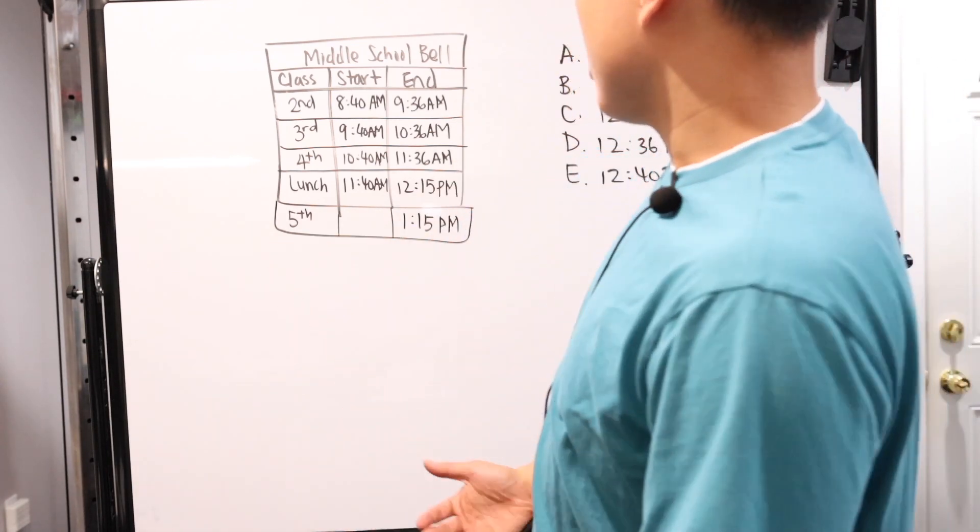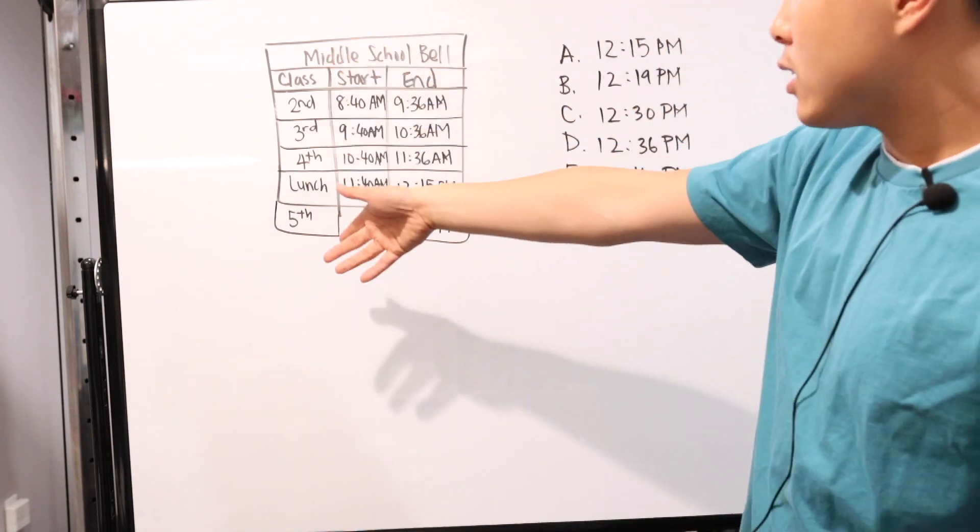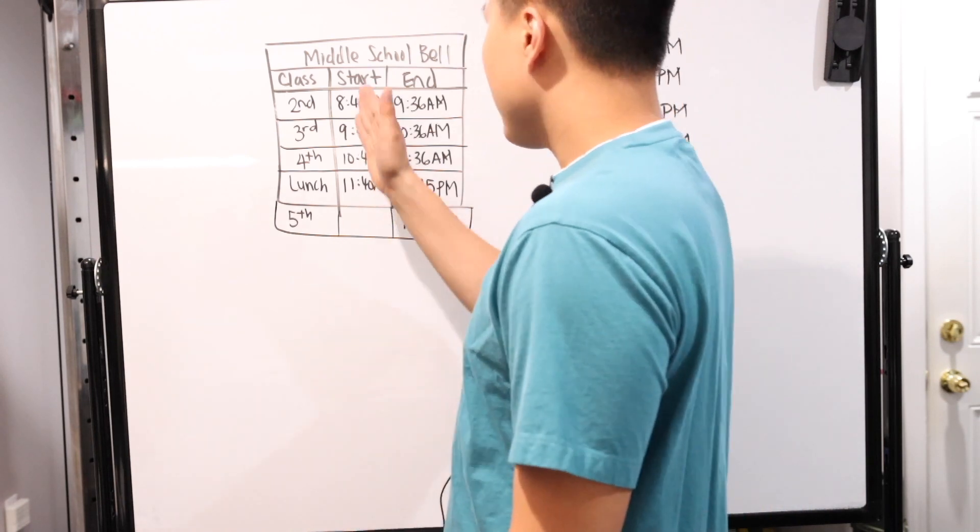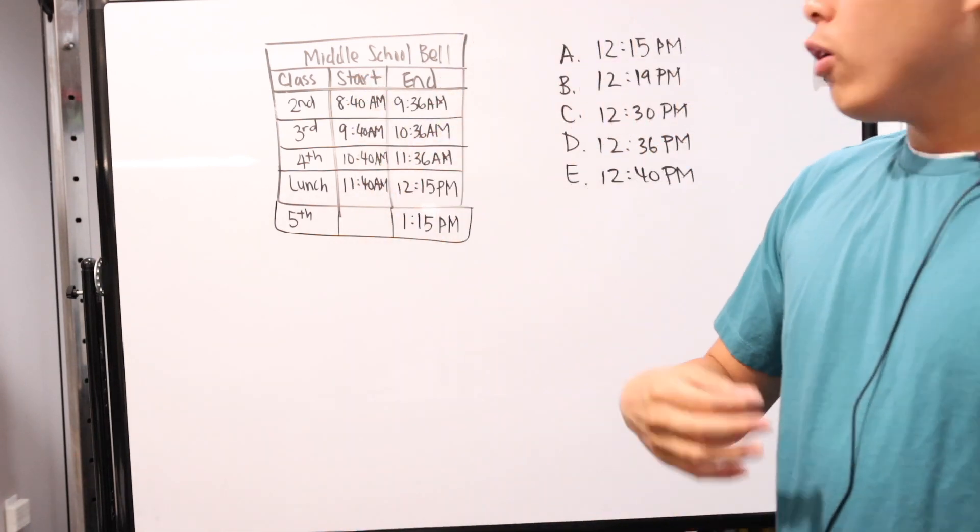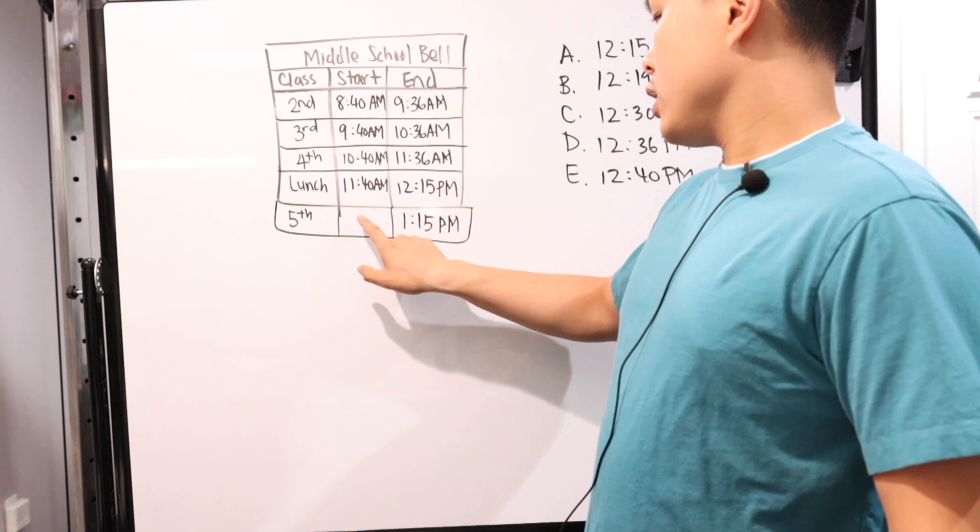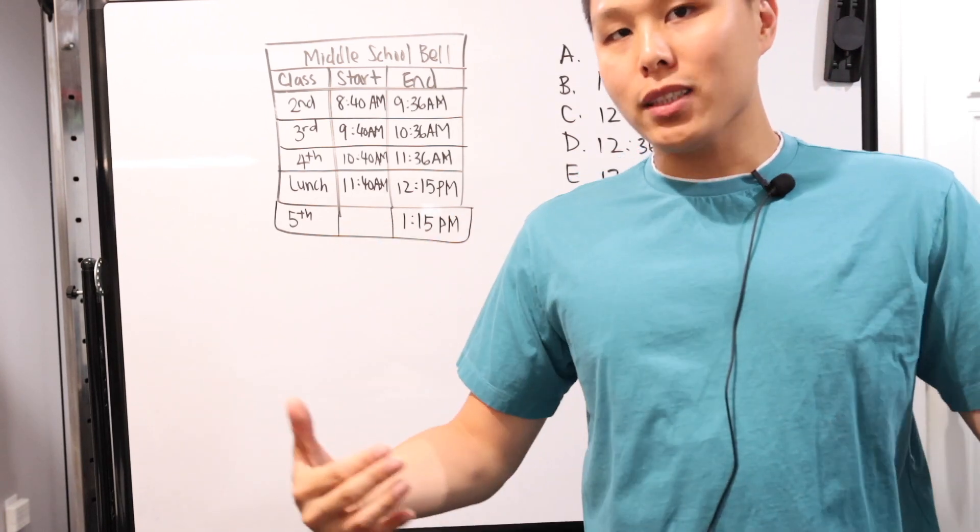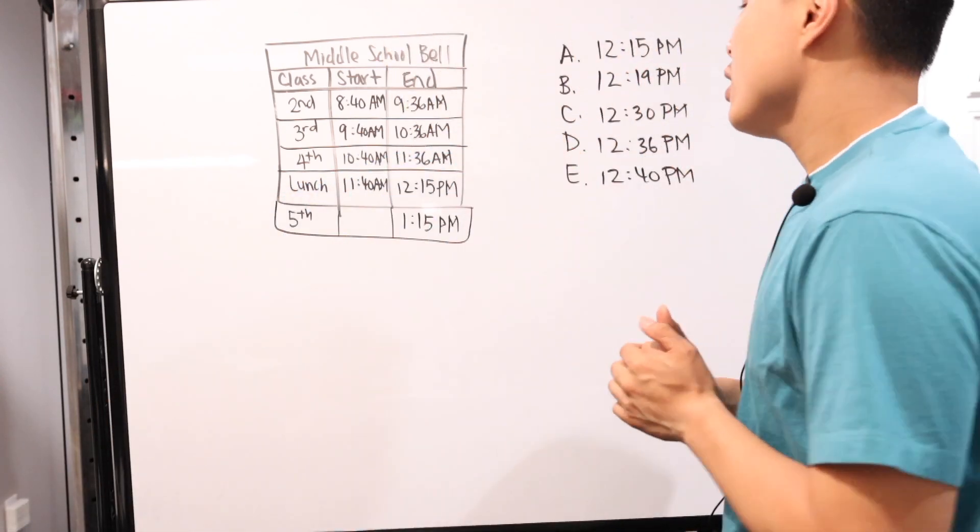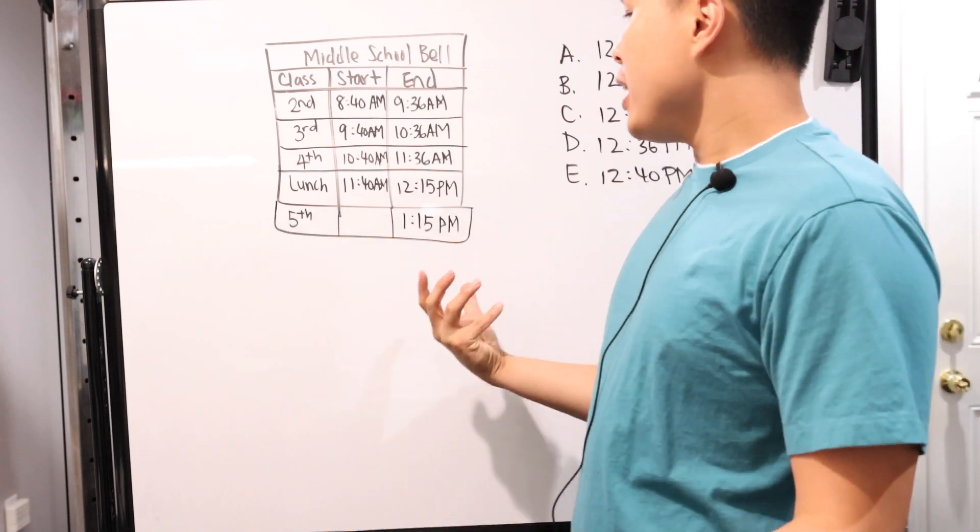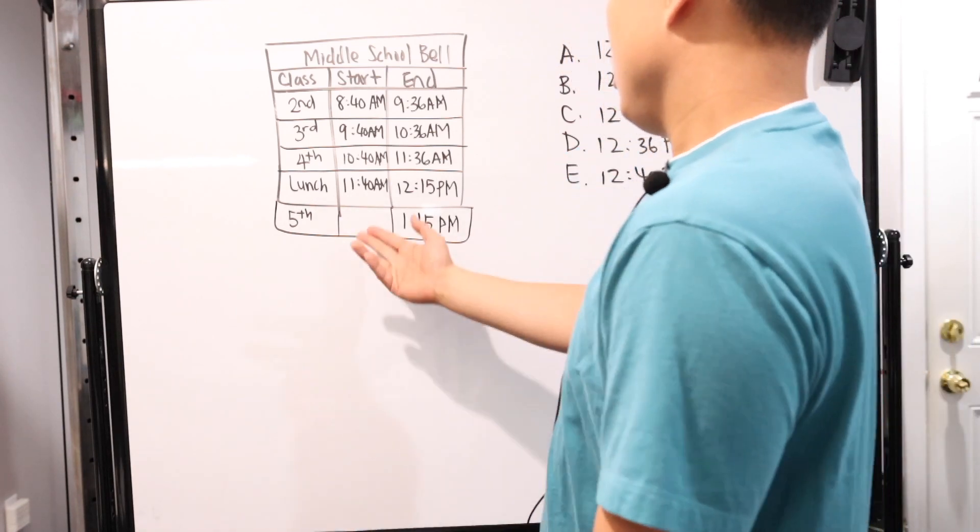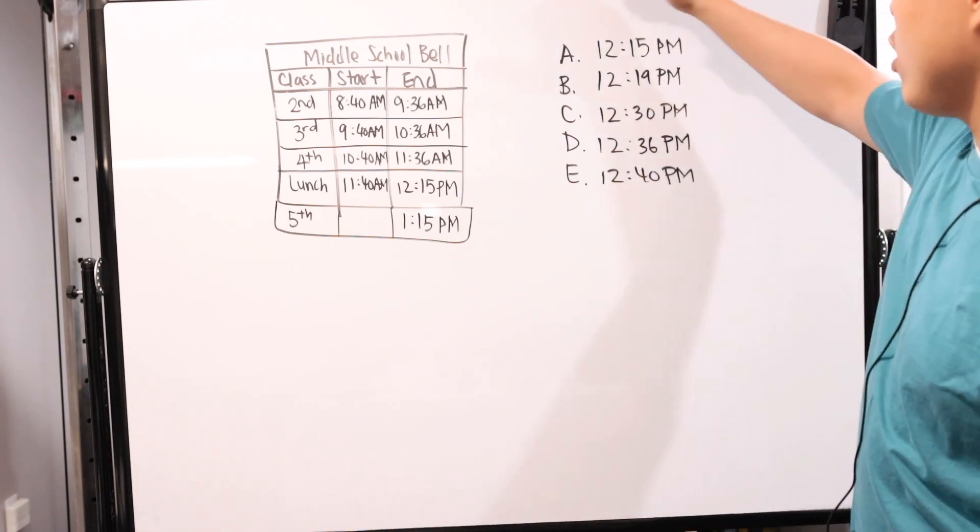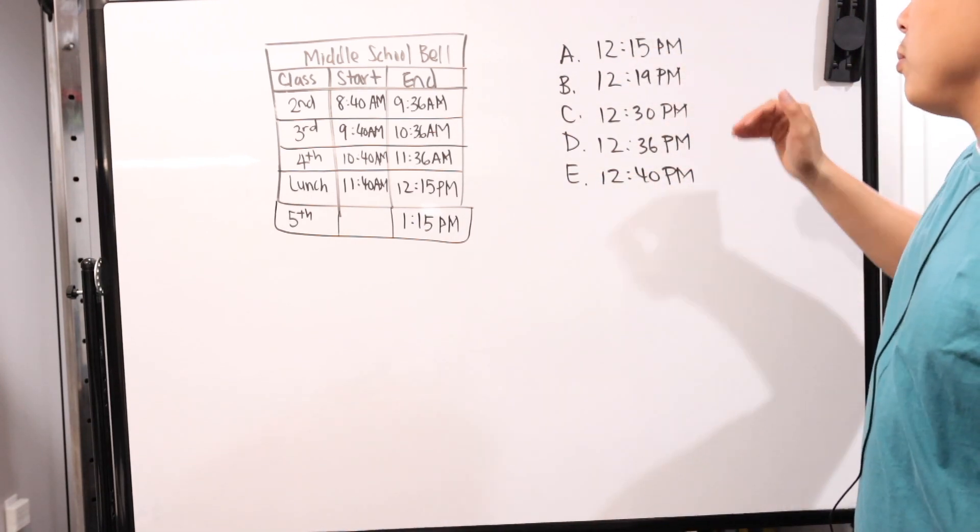So, they give you a chart. This is the middle school school bell, and then they have your classes from second, third, fourth, lunch, and fifth period. Then they have your start time, your end time. Now, they fill it all up except for this one missing box. And of course, I'm going to write the possibilities right here: A, B, C, D, E.